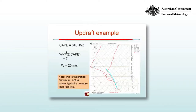Here's an example trace where the CAPE is only 340 joules per kilogram, which is actually quite small. You can see that by the small area between the saturated adiabat, at which parcels are ascending inside the storm, and the temperature profile.